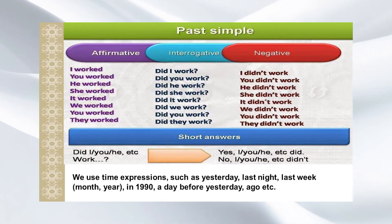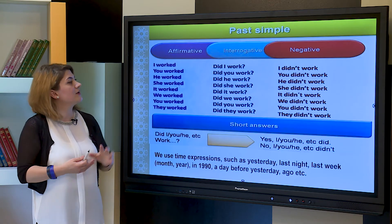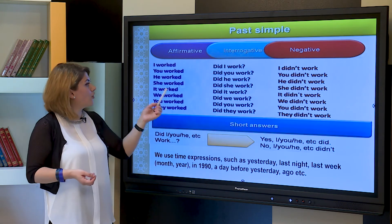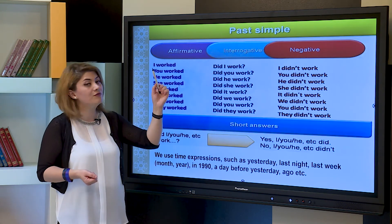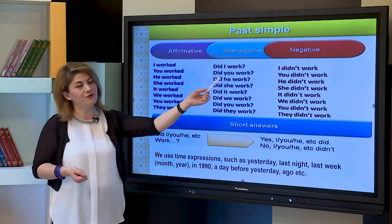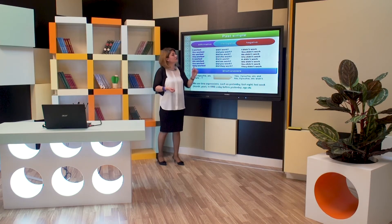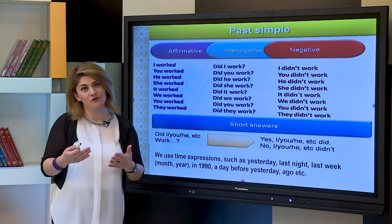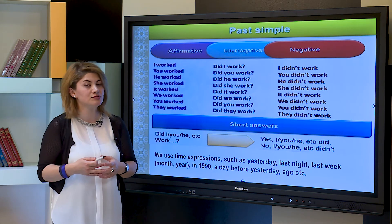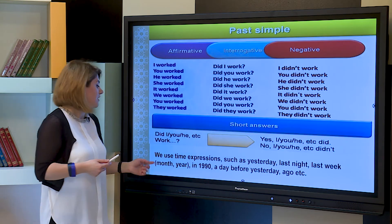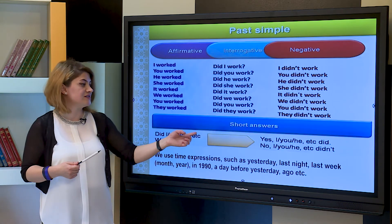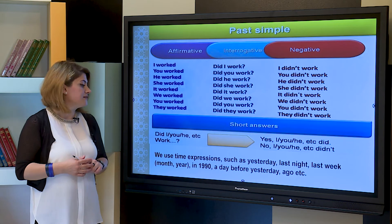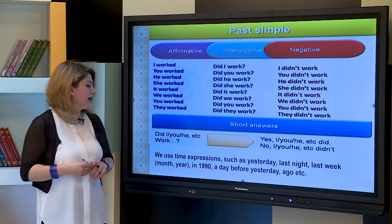We can use these sentences in affirmative, interrogative, and negative form. Affirmative: I worked; interrogative: did I work?; negative: I didn't work. You worked; did you work?; you didn't work. He worked; did she work?; he didn't work. As we know, every tense has its keywords or adverbs — past simple has time expressions such as: yesterday, last night, last week, last month or year, in 1990, the day before yesterday, and ago.